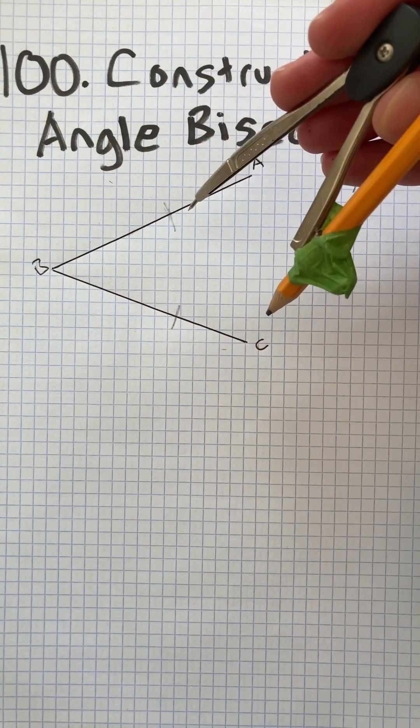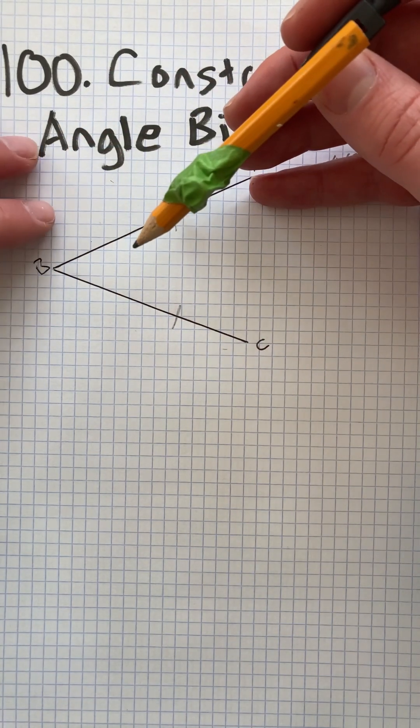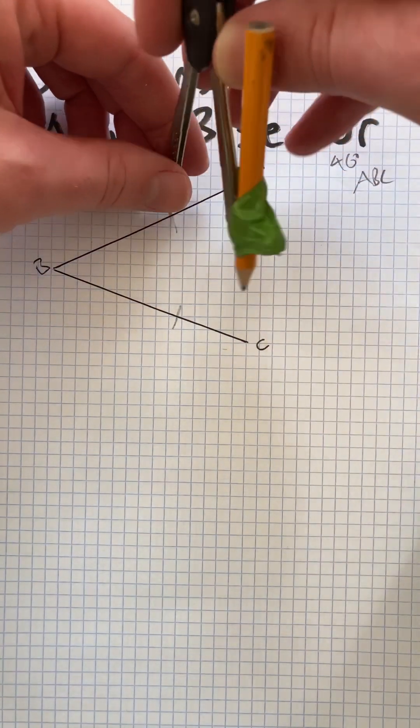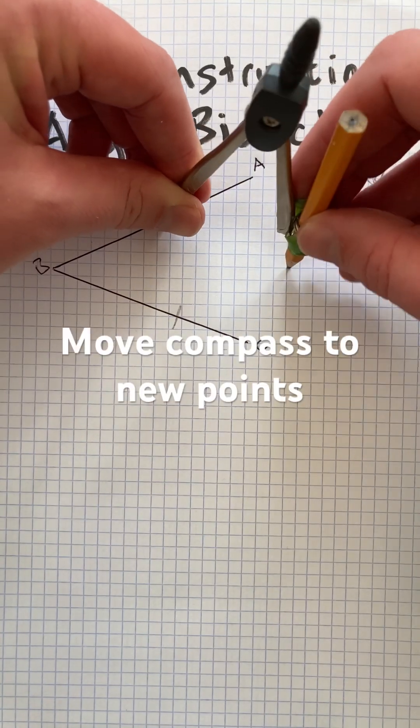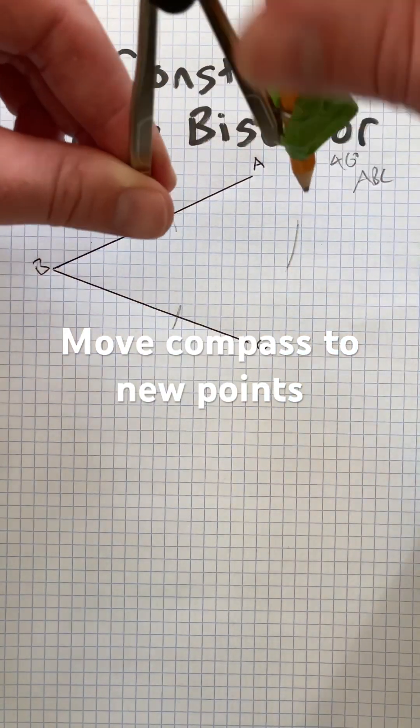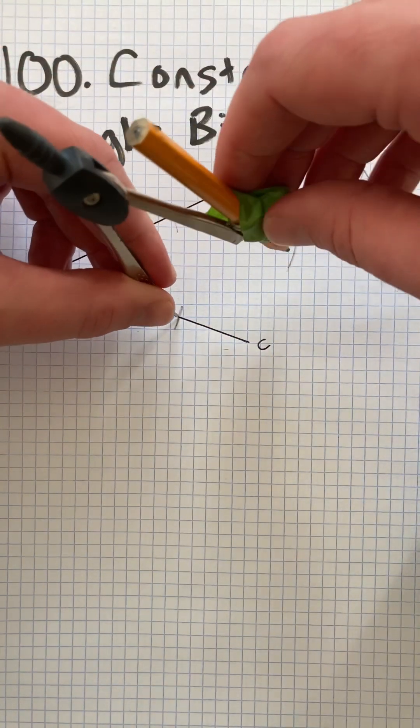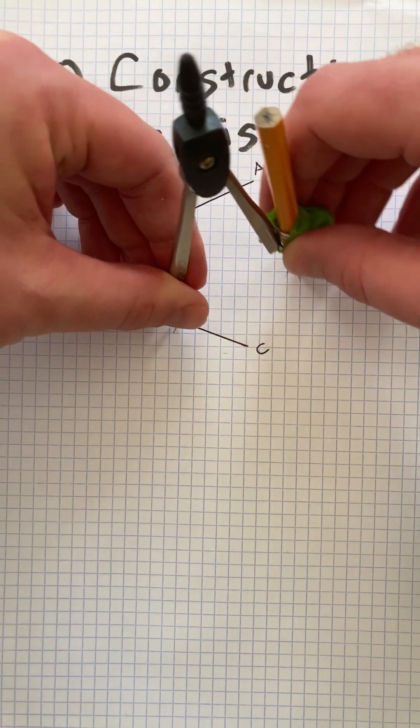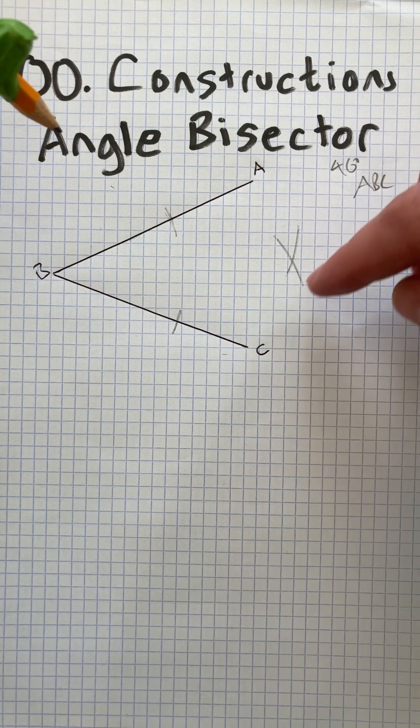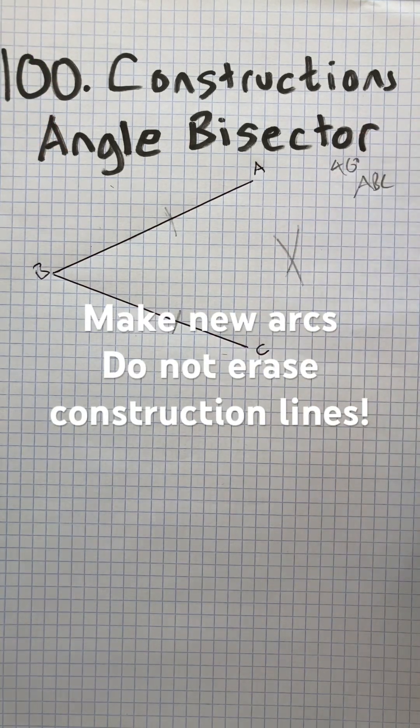Now without changing the size of your compass, move to those new arcs and make an arc out here. Make a generous arc so that when you move to the other side, BC, you make another arc out there. You should get those lines crossing like palm tree effects.